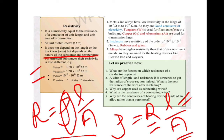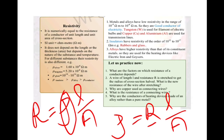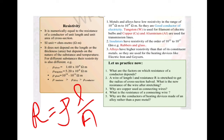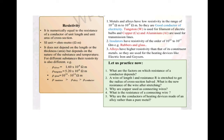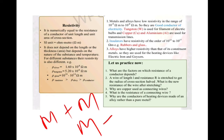Tungsten is used for the filament of electric bulbs, and copper and aluminum are used as transmission lines. Insulators have resistivity of the order of 10 raised to power 17 ohm-meter; examples include rubber and glass. Alloys are a homogeneous mixture of metal with metal or metal with non-metal.